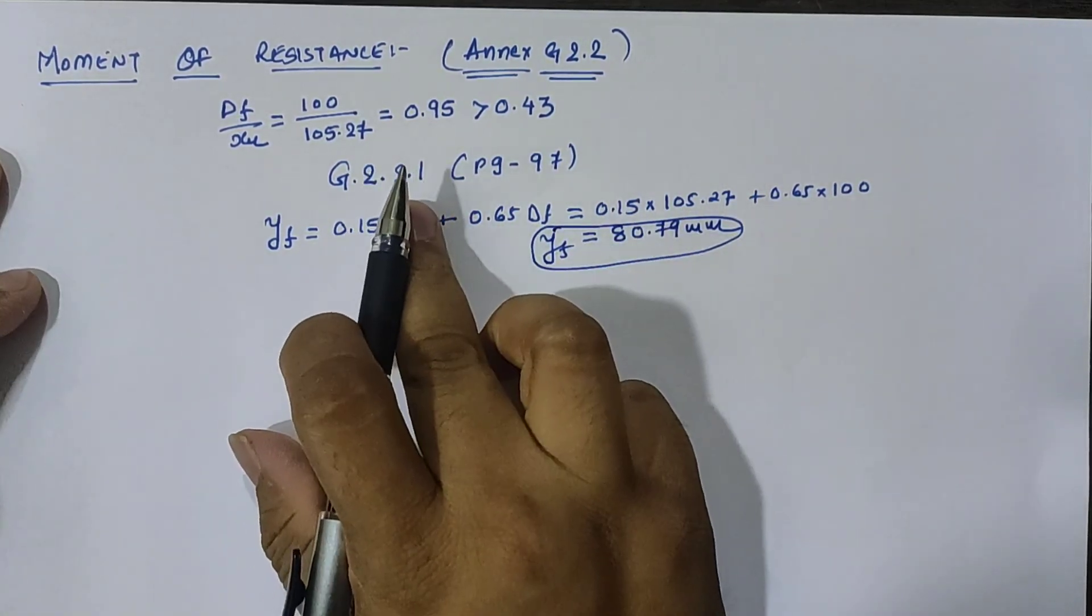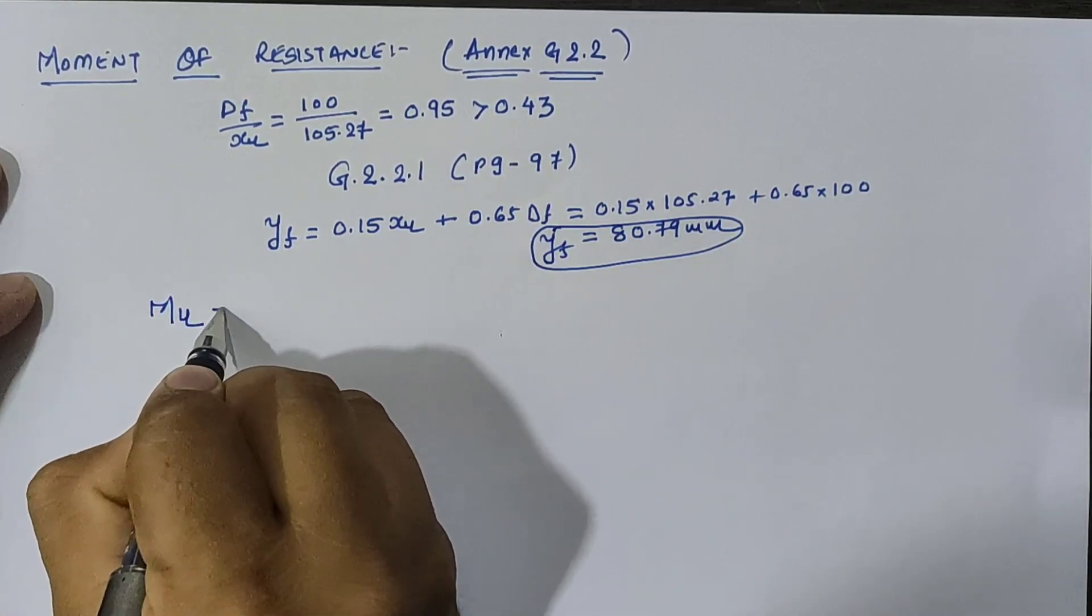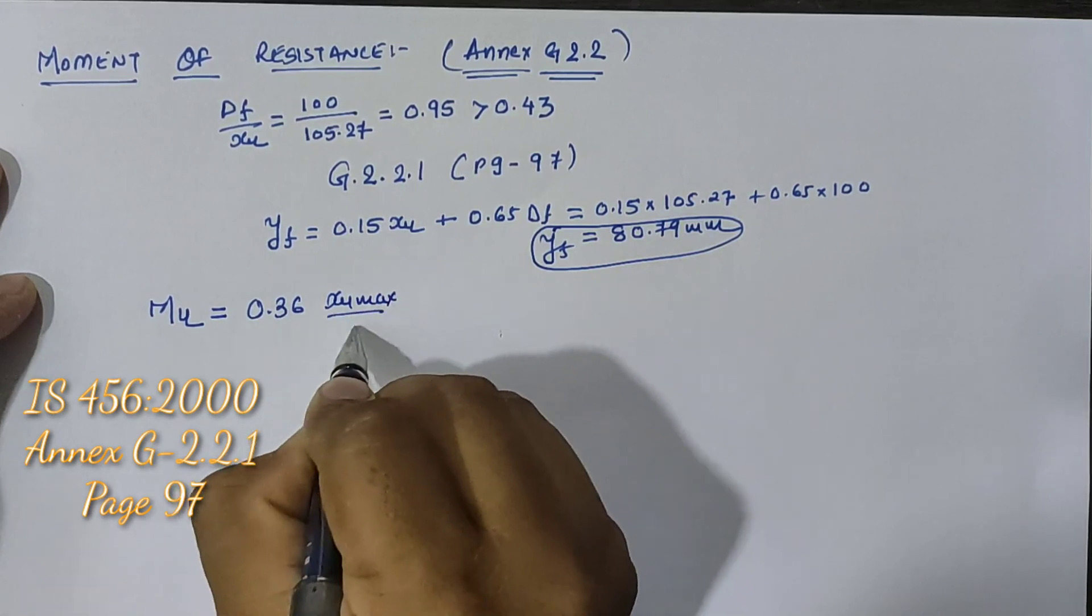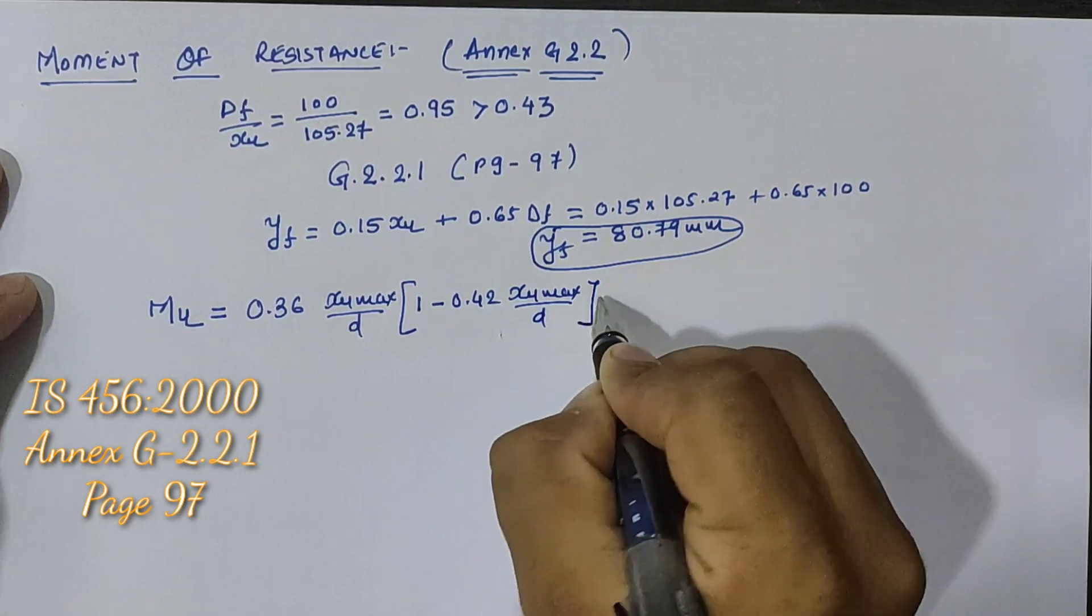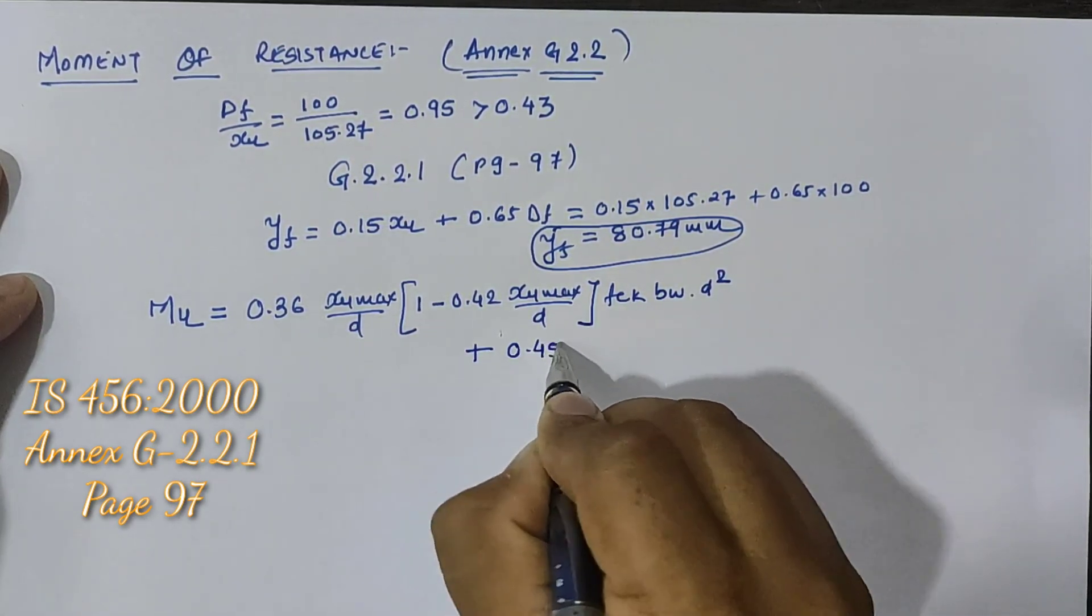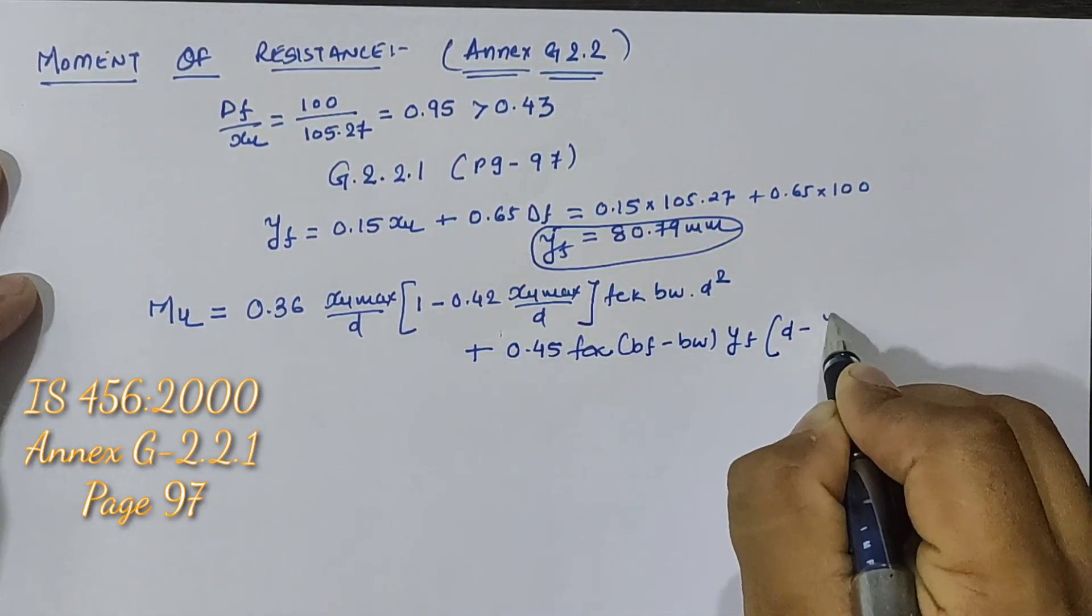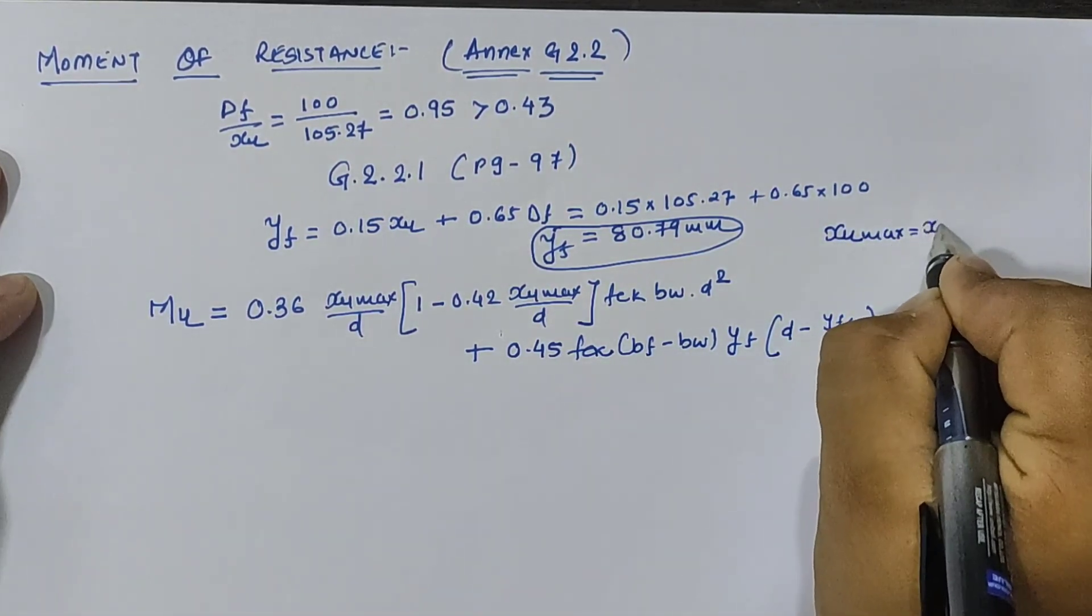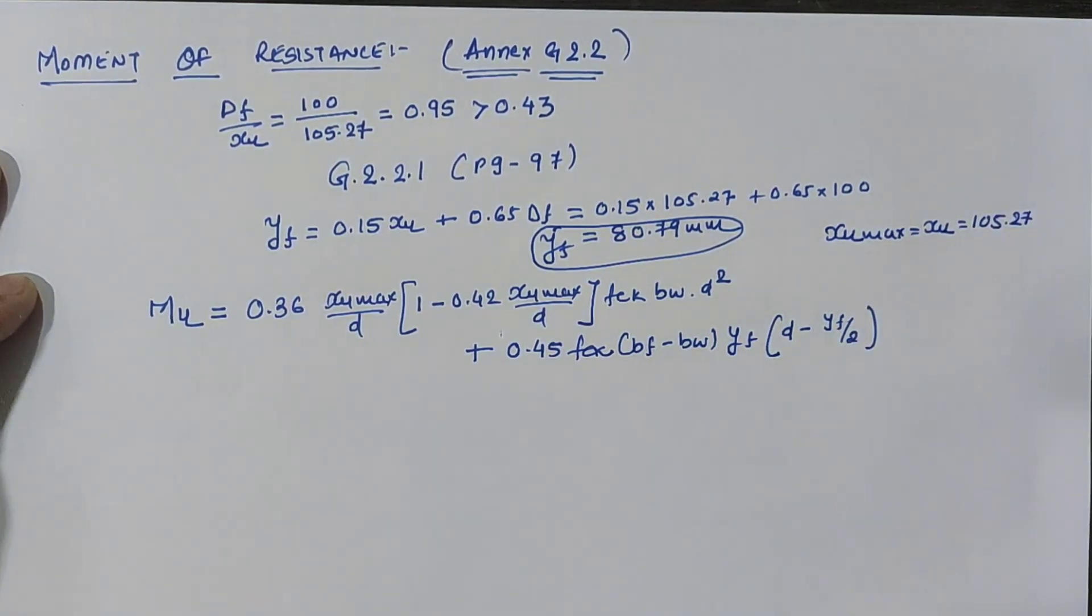Now according to G.2.2.1, our equation for moment of resistance is... We have to use xu max as the value of xu as 105.27 mm.